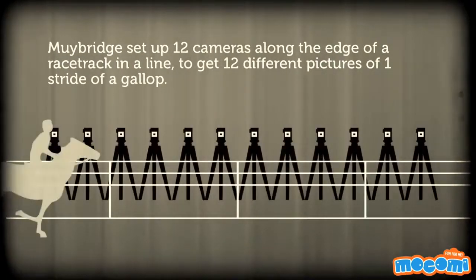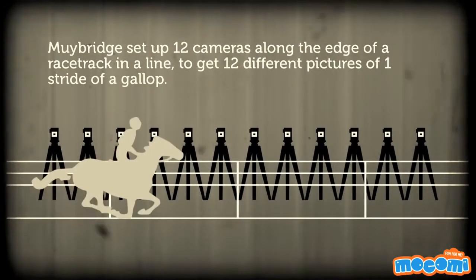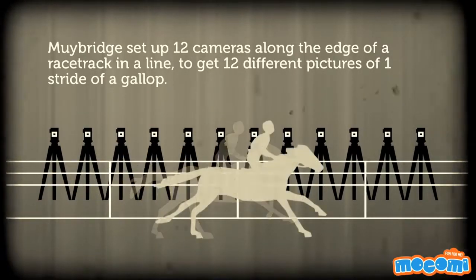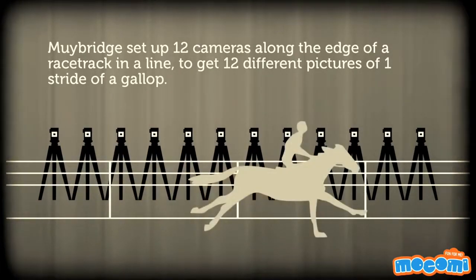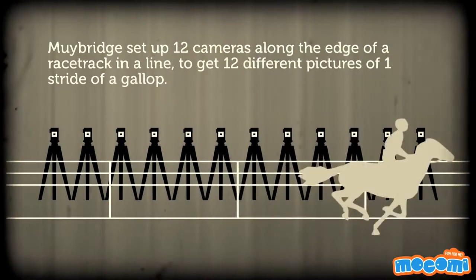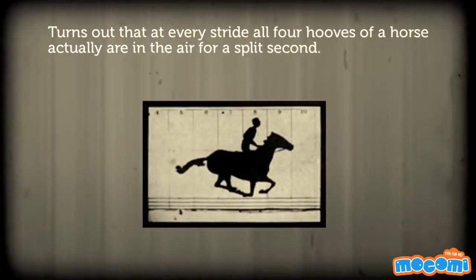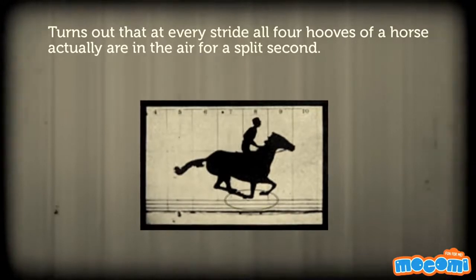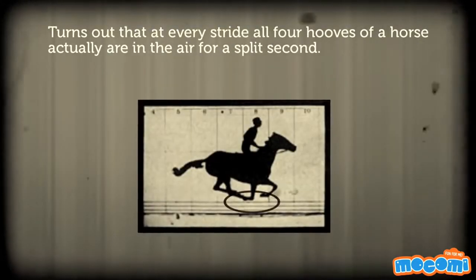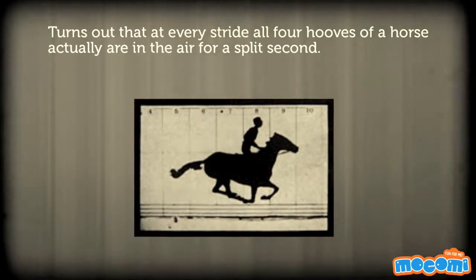Muybridge set up 12 cameras along the edge of a racetrack in a line to get 12 different pictures of one stride of a gallop. It turns out that at every stride, all four hooves of a horse actually are in the air for a split second.